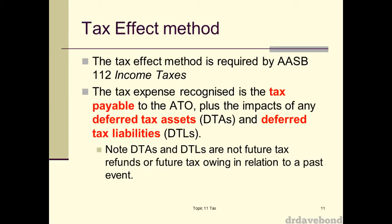The tax effect method is what AASB 112 requires. We need to do the first step, which is figure out how much we owe the government — and we've got to do that anyway, as part of legislative requirements. But the extra bit is the impacts of any deferred tax assets and deferred tax liabilities, which we've got to look at in terms of our expense item.